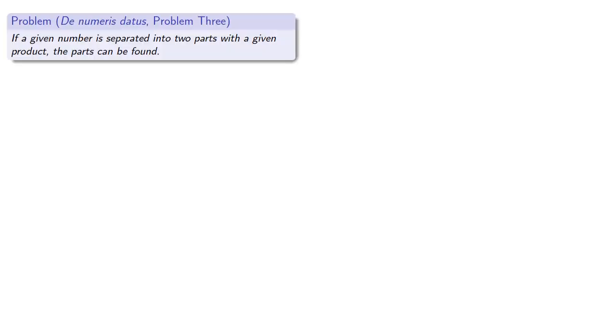For example, in Problem 3 of De Numeris Datis, Jordanus solves a familiar problem. If a given number is separated into two parts with a given product, the parts can be found.